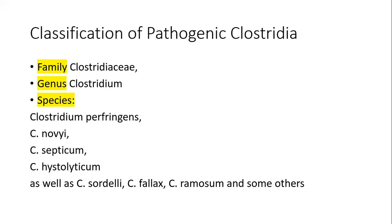The causative agent of gas gangrene belongs to family Clostridiaceae, genus Clostridium. There are three main species. The most common is Clostridium perfringens. More rare are Clostridium novyi, septicum, and histolyticum. Others include Clostridium sordellii, fallax, ramosum, and some others.